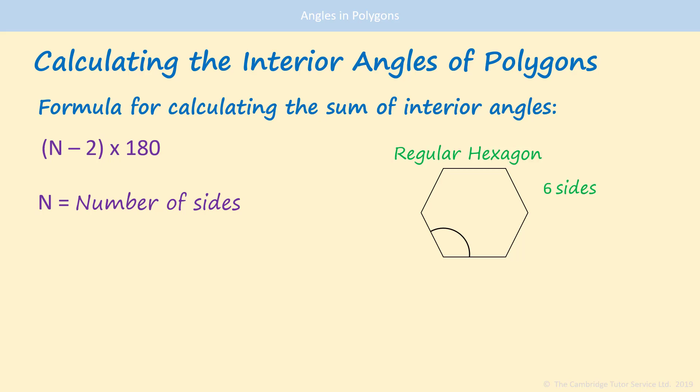It has 6 sides, so we replace n with 6 in the formula. 6 minus 2 times by 180. That's 4 times 180. That's 720.